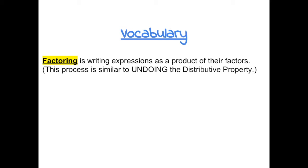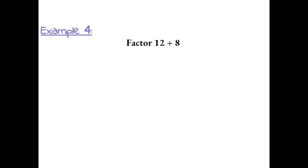Next we're going to learn factoring. Factoring is writing expressions as a product of their factors. This process is similar to undoing the distributive property. Example 4: factor 12 plus 8. So we want to take out a number from 12 and 8, and the number we want to take out is the greatest common factor of 12 and 8.